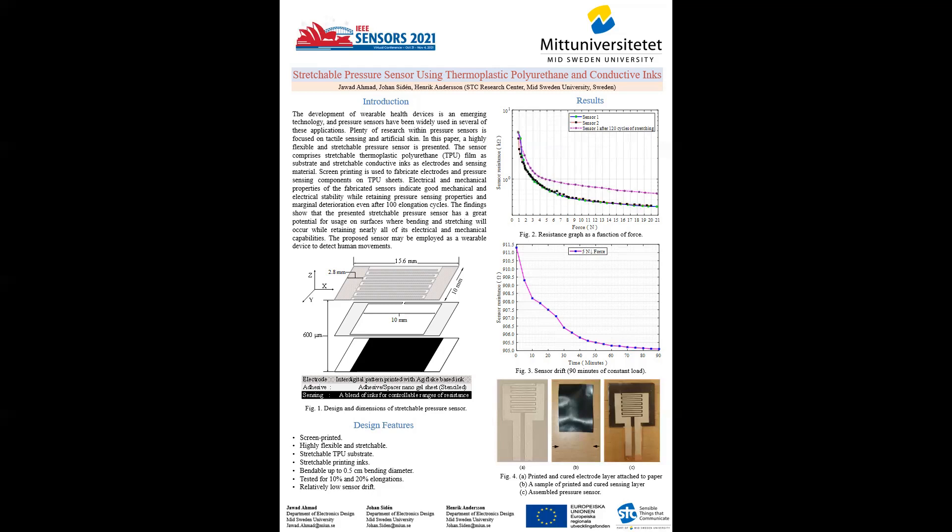The design of the sensor consists of two printed layers of TPU sheets and a buffer layer of nanogel adhesive. TPU sheets are 80 micrometers thick while the nanogel adhesive is 450 micrometers thick. The overall thickness of the proposed pressure sensor is 600 micrometers.